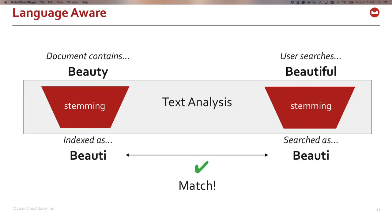Language awareness comes from language-specific transformations on the input text, such as stemming. For example, the English words 'beauty' and 'beautiful' stem to the same thing — 'beauti' with an I. By running the same stemmer on both the input document and the search query, the search magically finds the relevant document with the same meaning, even though the original strings are different.